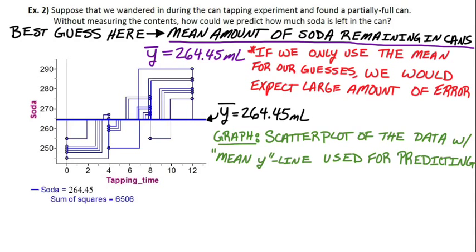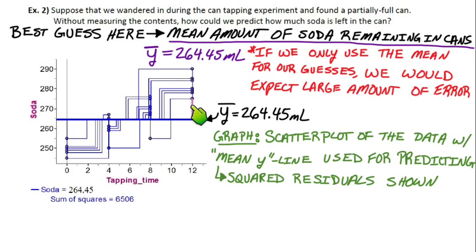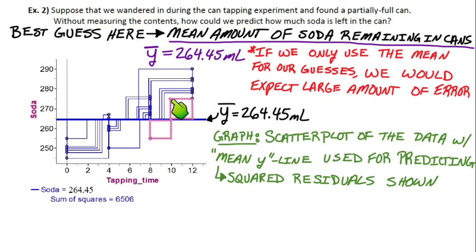This isn't the LSRL — this is the mean Y line used for predictions. The squares shown on the graph are the squared residuals, shown in pink. For each data point, the residual is the vertical distance from the point to the line. The squared residual would be the area of that square. So the actual dots are our data points — sodas remaining in the can — and the squared residuals are shown in pink.